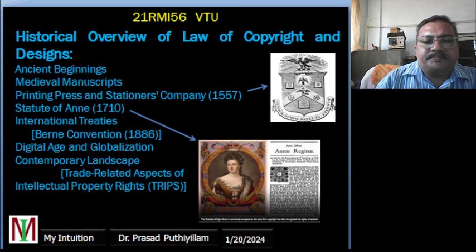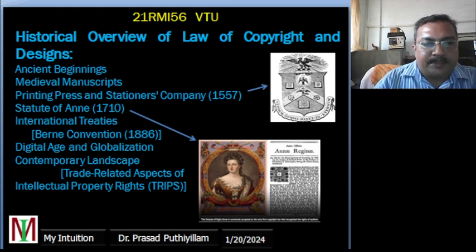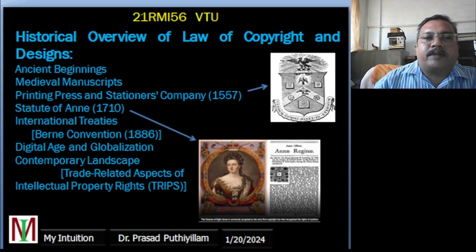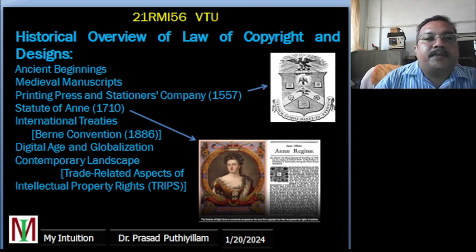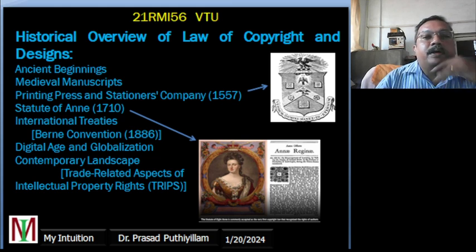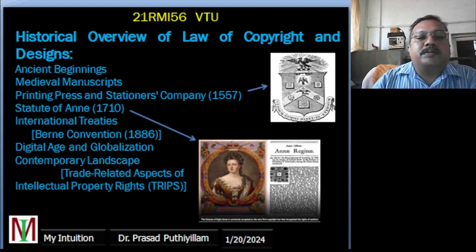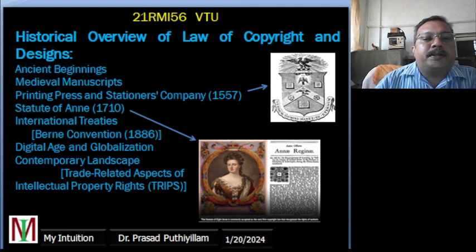The historical overview covers how copyright and design laws came into existence. The concept of copyright and design has existed since ancient times — ancient beginnings. Copyright and design protection originated from ancient civilizations where people wanted to recognize and control their creative work. Although no official written laws existed, the concept of safeguarding creativity was maintained through mutual respect; others did not imitate original works in ancient times.